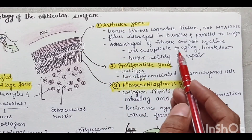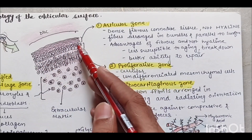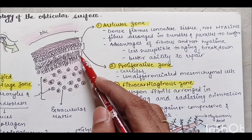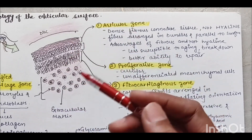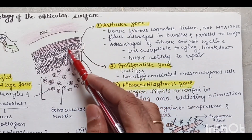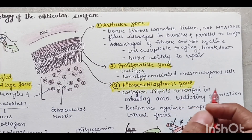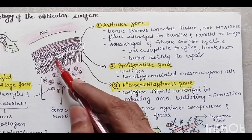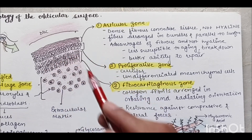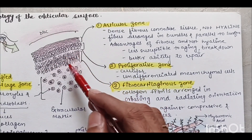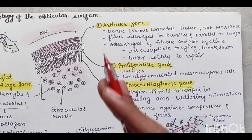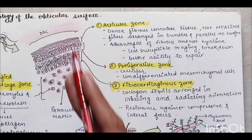Below the articular zone is the proliferative zone, completely made up of cellular tissue with undifferentiated mesenchymal cells that differentiate into chondrocytes and chondroblasts. The third zone is the fibrocartilaginous zone, where collagen fibrils are arranged in a crossing and radiating orientation — radially and crisscross — so they are parallel to the direction of force and can resist compressive and lateral forces.